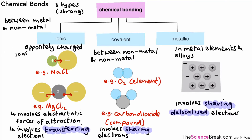Hello, today we're going to look at the details of the covalent bond, but first a quick recap on something we've seen previously. You may remember this from the last video all about bonding — we looked at ionic bonding, covalent bonding, and metallic bonding, and we looked at a brief overview of each kind of bond, each described as a strong bond. We're going to do a quick recap on the ionic bond and then go on to look at the details of the covalent bond.